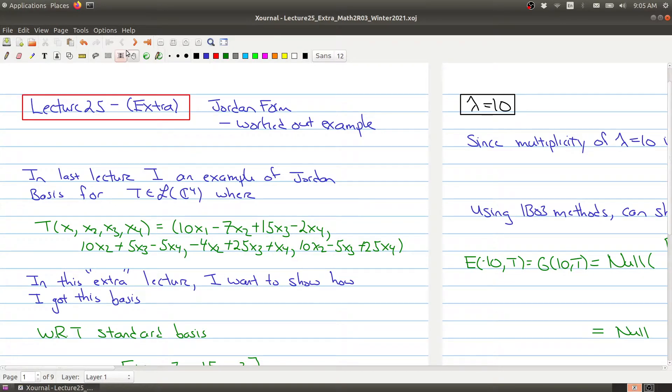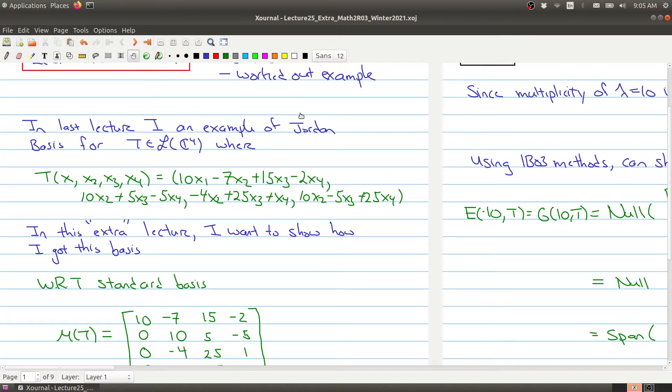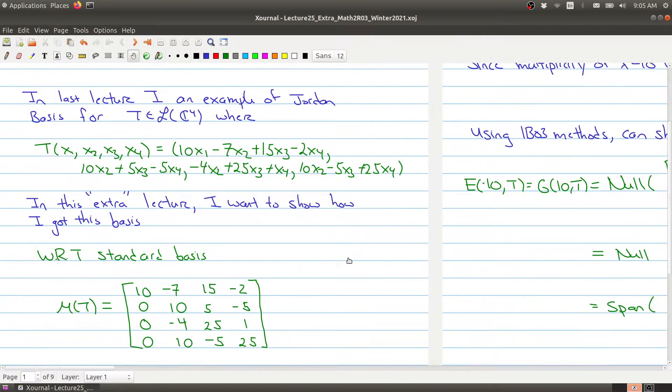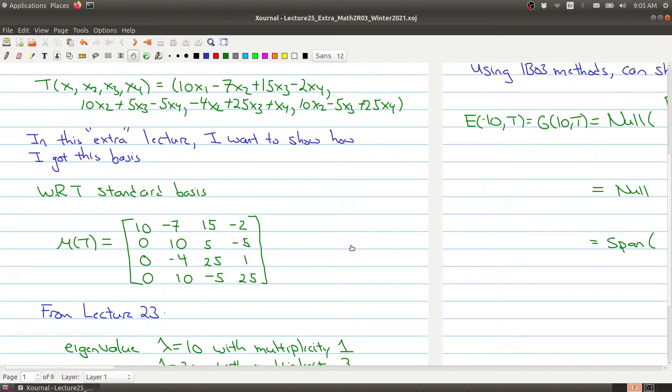Okay, so the example I want to look at is actually the example that I gave in lecture 25. I gave a Jordan basis for this particular linear operator. And so in this extra lecture, I want to show how I got this basis. Okay, so that it's in Jordan form. Now, with respect to the standard basis, it's clearly not in the Jordan form, because the Jordan form has block diagonal matrices where the eigenvalues are appearing on the diagonal entries, and then you are allowing some ones on the diagonal above it, and then there are zeros everywhere else.